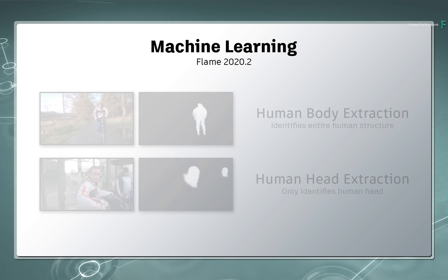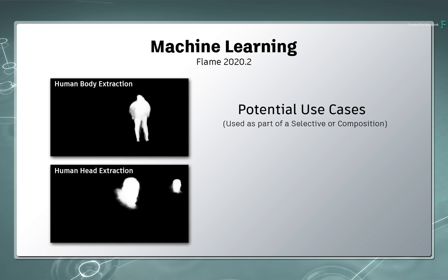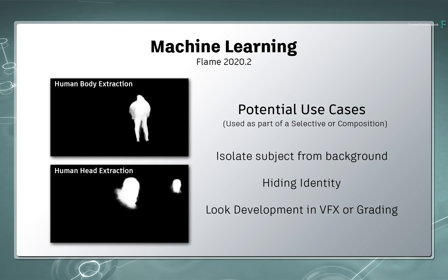In both cases, you can then use the extraction as part of a selective or composite. For example, you may need to roto someone in a shot, or perhaps blur some faces out really quickly. We'll run through a couple of examples, but I'd like to point out straight away that this is not a silver bullet solution.